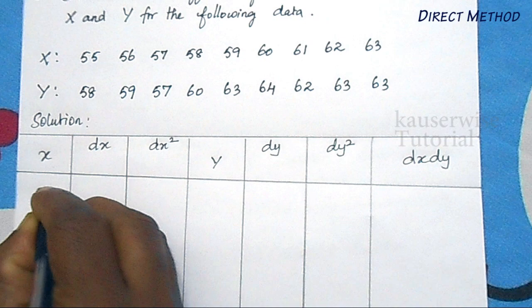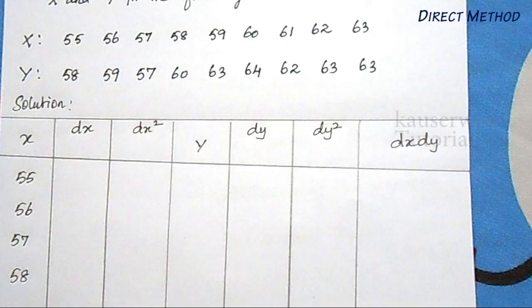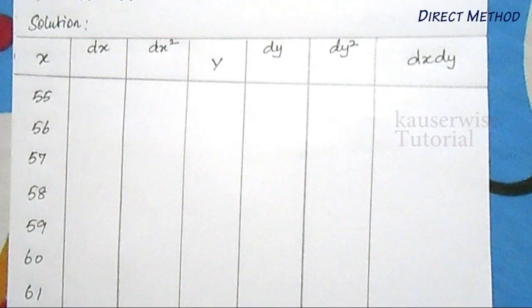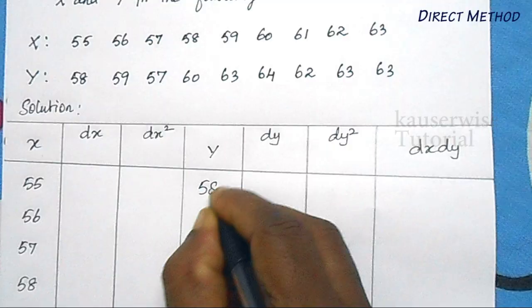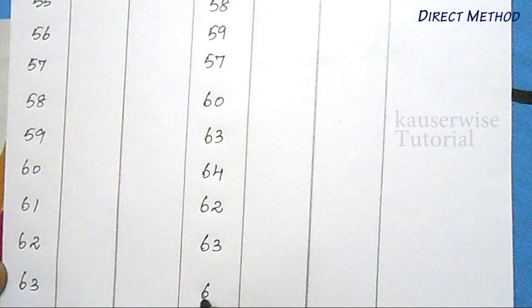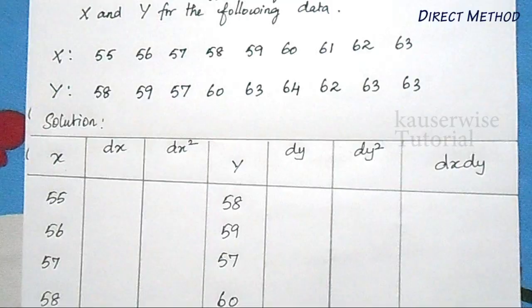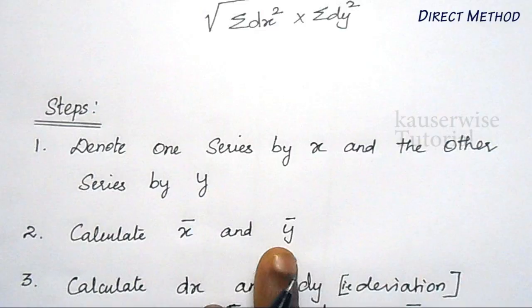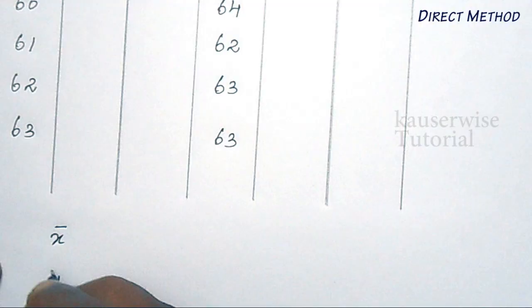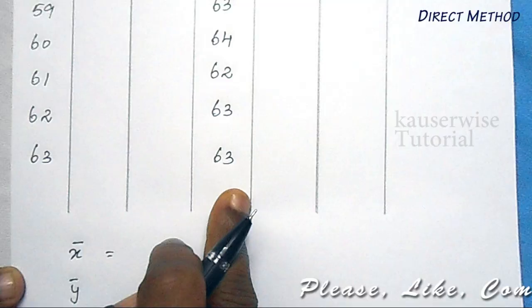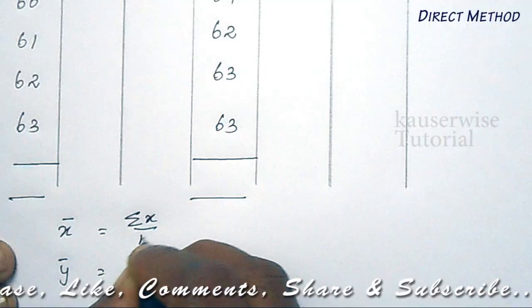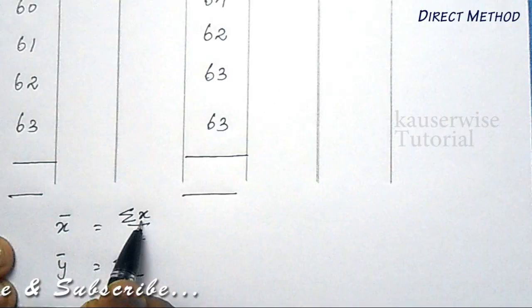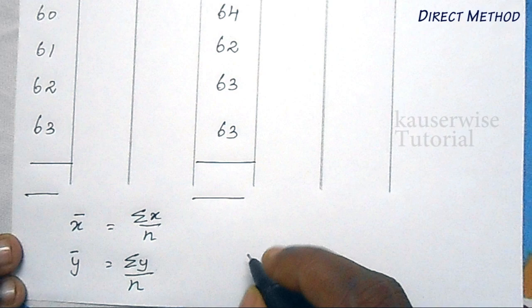The x series values are 55, 56, 57, 58, 59, 60, 61, 62, and 63. The y series values are 58, 59, 57, 63, and 63. These are the two series taken from the problem. Now the second step: we have to calculate x̄ and ȳ. x̄ means the average of the x series and ȳ means the average of the y series. The formula is x̄ = Σx/n and ȳ = Σy/n, where n is the number of observations. In this problem, n = 9.